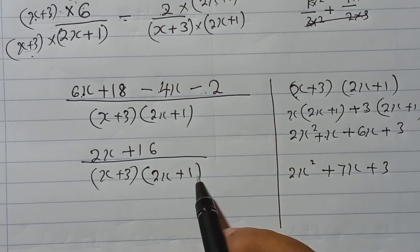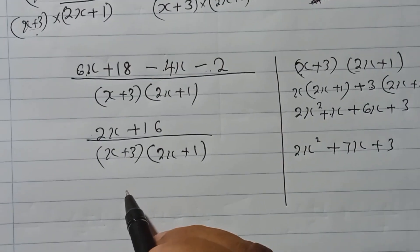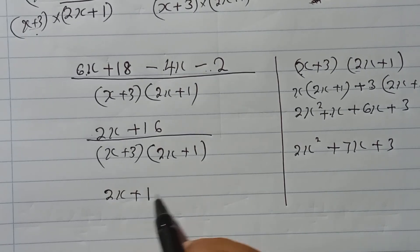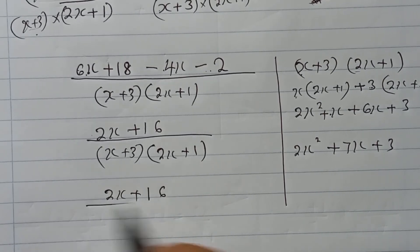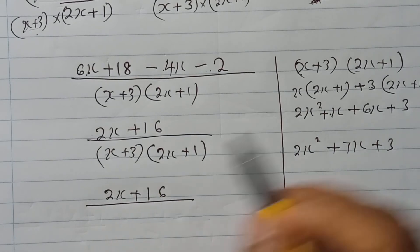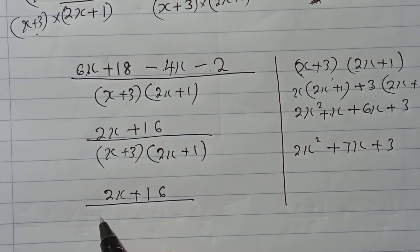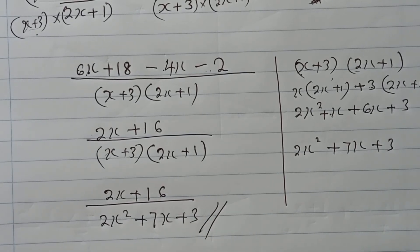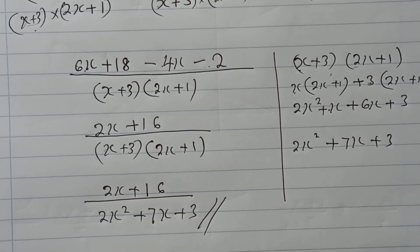Now I can write the final answer. With 2x plus 16 over the expanded denominator, it will be 2x plus 16 over 2x squared plus 7x plus 3. That's the completely simplified answer.